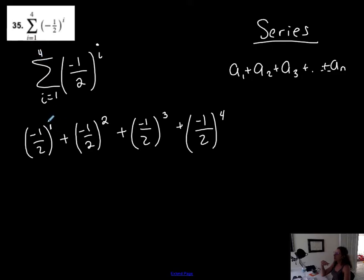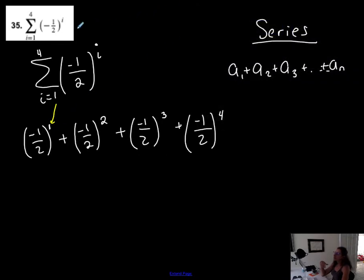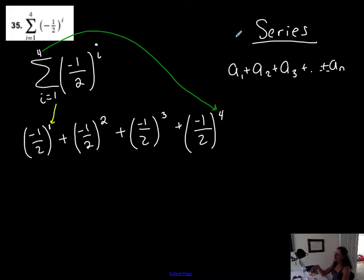I'm starting at 1 and going through whole numbers up until I reach 4. So this tells me where to start and this tells me where to finish, and this is the formula I use. This symbol tells me to take the sum, so I'm creating a series.